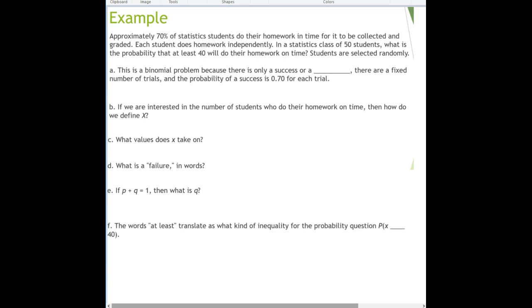This is a binomial problem because there is only a success or a failure. There are a fixed number of trials and the probability of a success is 70% for each trial.